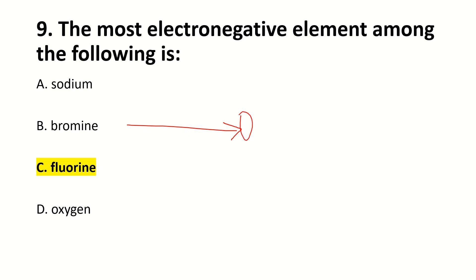For example, this will be more electronegative. But top to bottom it decreases. Fluorine is here, helium is here.